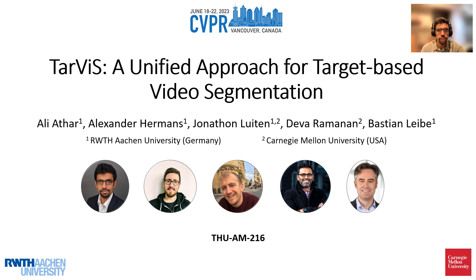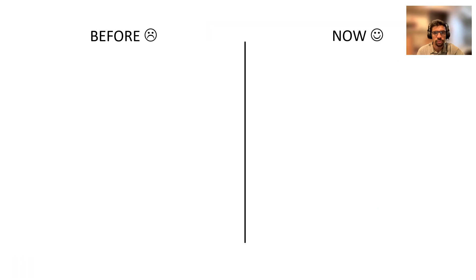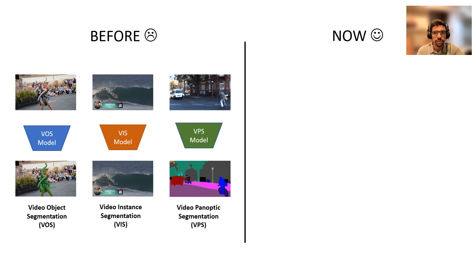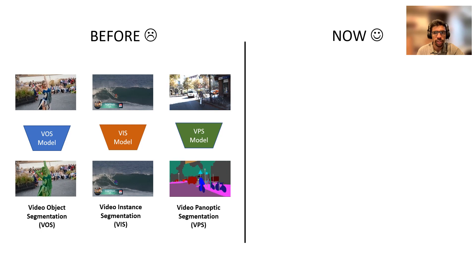Hello everyone, in this video we propose Tarvis, which is a unified architecture for tackling target-based video segmentation tasks. Currently, SOTA methods for tasks such as video object segmentation, video instance segmentation, and video panoptic segmentation employ task-specific architectures.